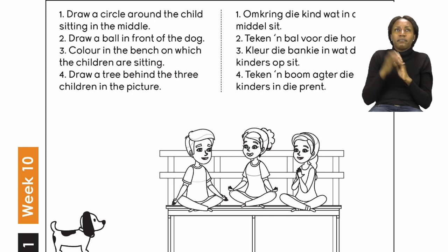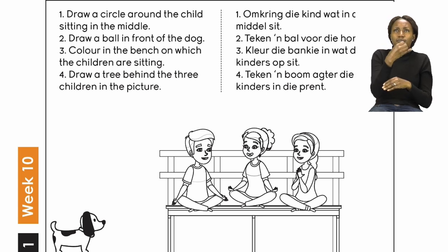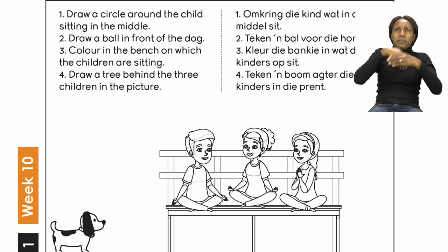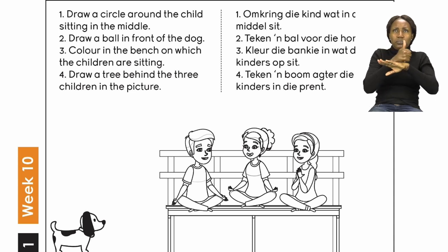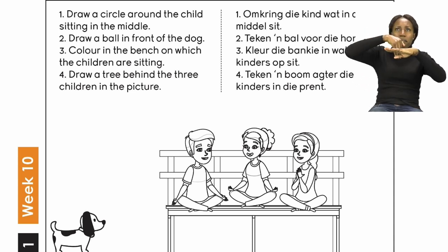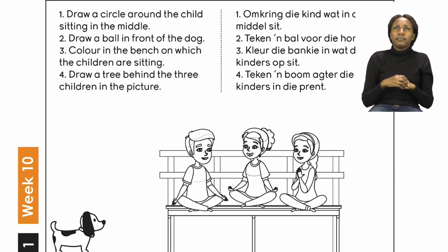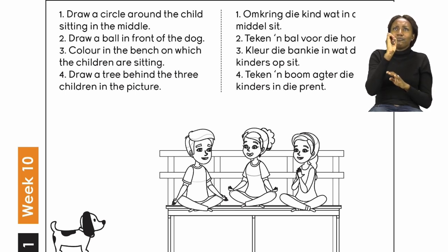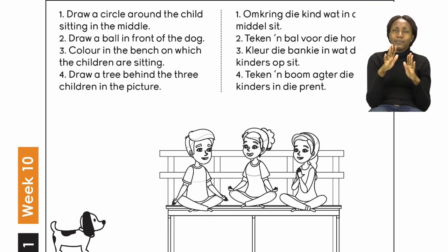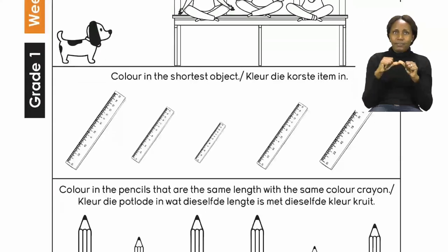The last instruction is to draw a tree behind the three children in the picture. Behind means at the back of. So your tree must not be next to the bench or close to the dog, but behind the children. Make sure your tree is long enough for us to see it. Once you are done, you can move to the bottom of your page.